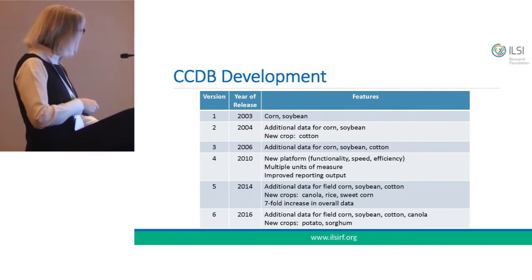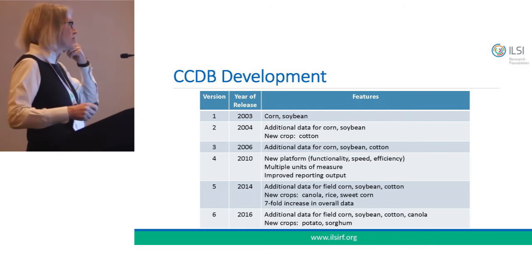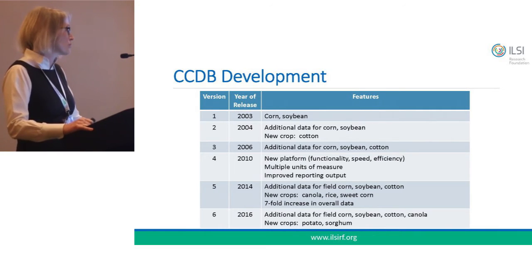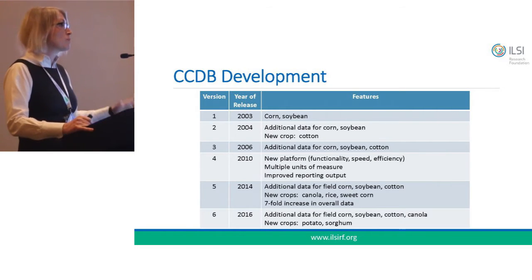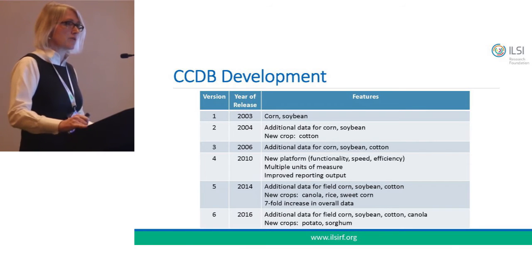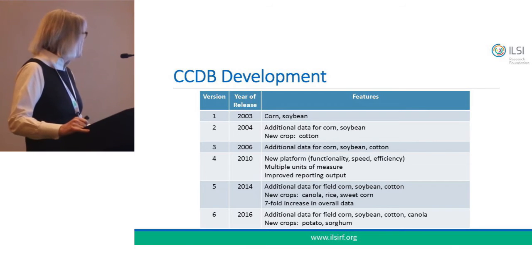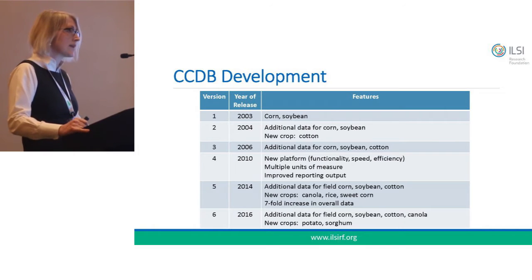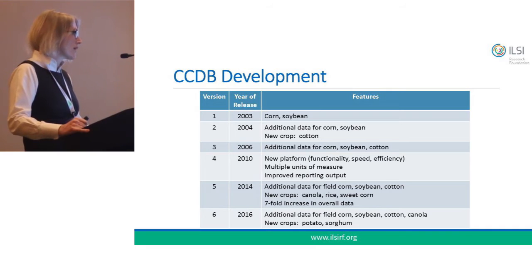One of the challenges when GE plants first entered the market was that there was no comprehensive resource or verifiable data about the natural variability of compositional components of plant species. In 2003 when the first version launched, the data was limited to two crops — corn and soybean — simply because those were the most prevalent genetically engineered species entering the marketplace. The database has grown over time to include more data for existing crops, new crops, and improved functionality.